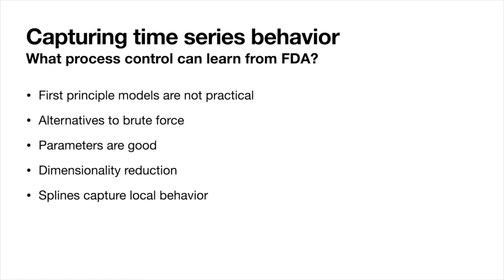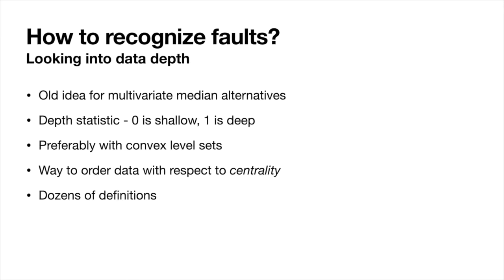And for this, we wanted to focus on spline representation of the signal. So we want to represent our time series measurements with a spline function. Their benefits is that dimensionality might be a little bit lower, and we will be able to capture local behavior when the fault occurs. And how we can recognize the faults, even if we have that model? Well, we want to use the data depth statistics.